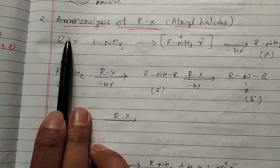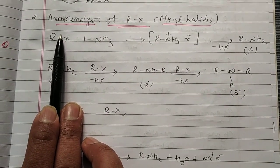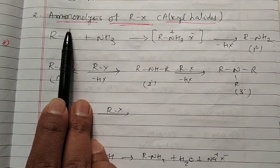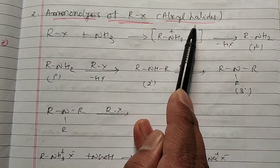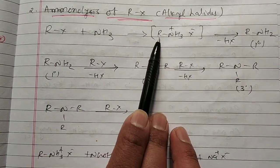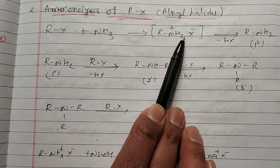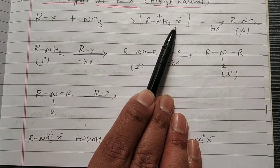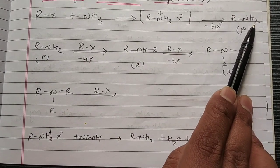Second, it is really very easy, ammonolysis. Ammonolysis means nothing but the reaction treated with ammonia. So ammonolysis of Rx, alkyl halide. So when Rx is treated with NH3, intermediate condition we get R-NH3⁺ X⁻. This is highly unstable, immediately it is converted to HX release and you get RNH2, that is primary amine.